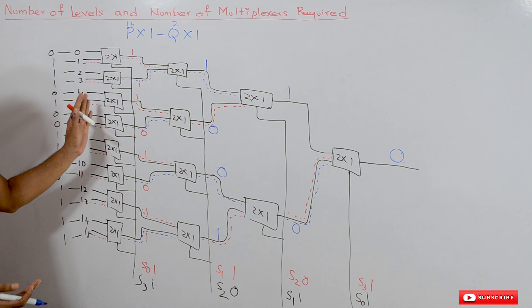From this diagram, can you count the number of multiplexers required? It is 1, 2, 3, 4, 5, 6, 7, 8, 9, 10, 11, 12, 13, 14, and 15 — so 15 multiplexers are required. And how many levels are there? Four levels are there.